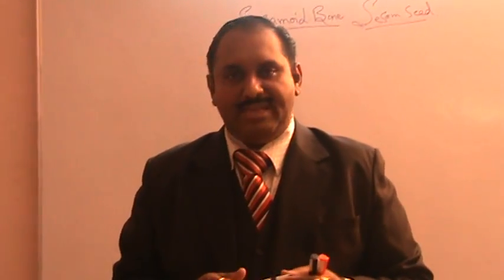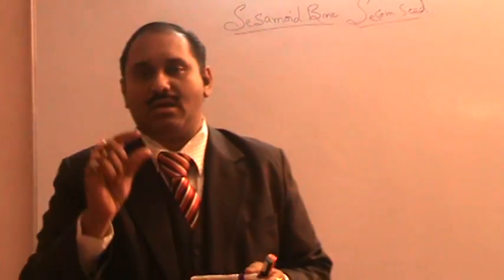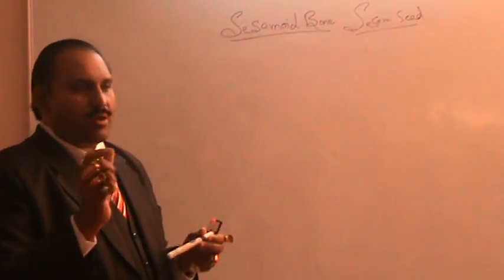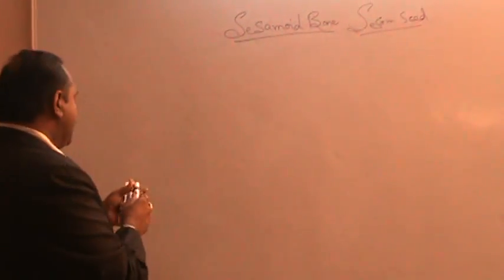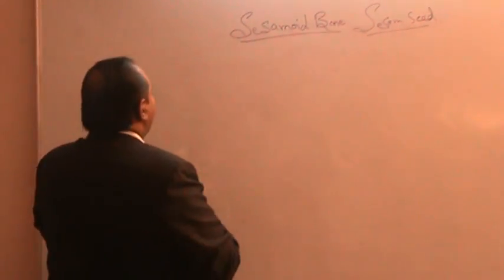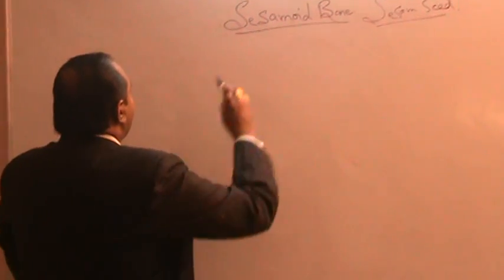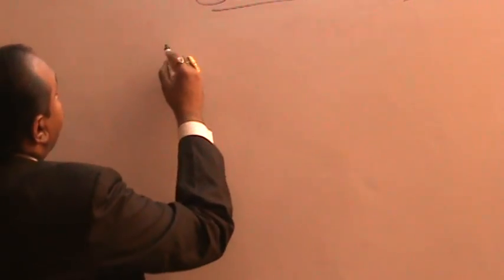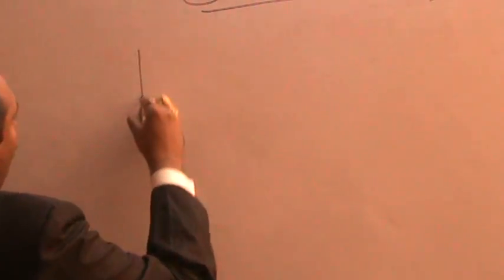So these sesamoid bones are basically seed-like bones or bony nodules which are present within the tendons.